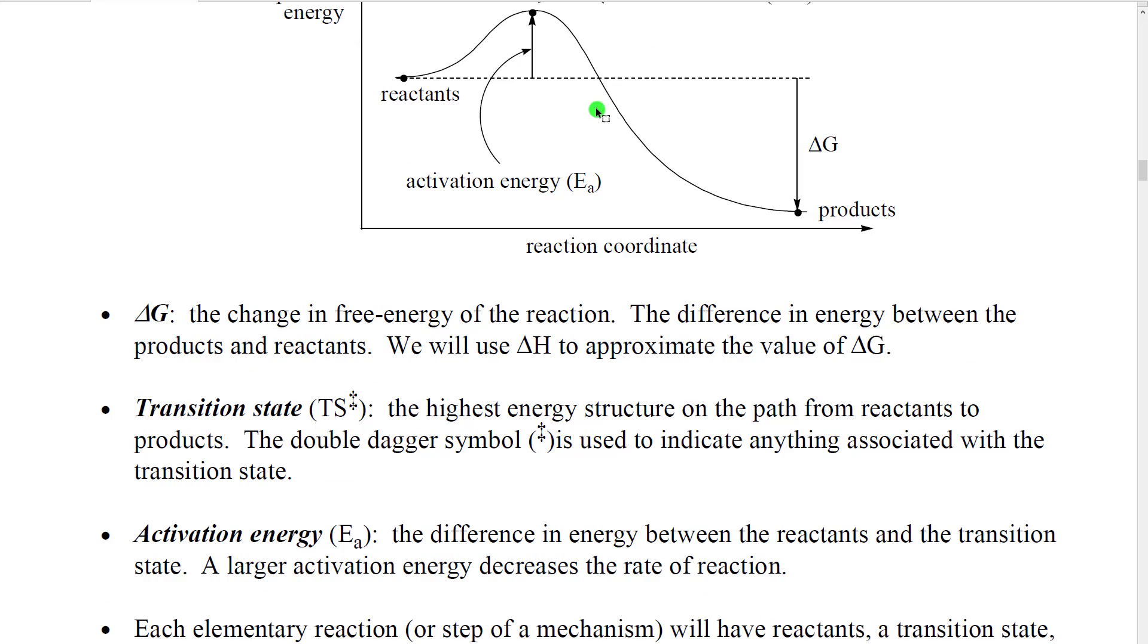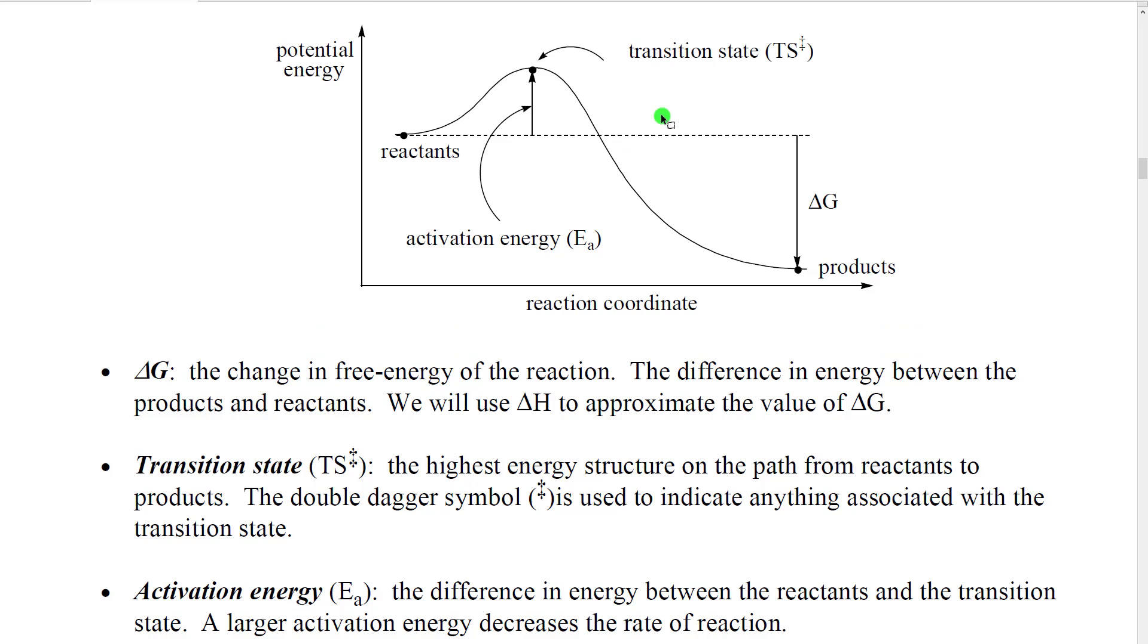There is another energy quantity on this chart, the activation energy. The activation energy is the change in potential energy from the reactants up to the transition state. The significance of the activation energy is that it controls the rate of that individual reaction. The larger the activation energy, the slower the rate of the reaction.